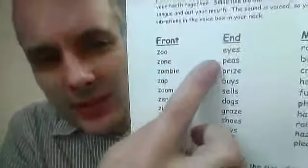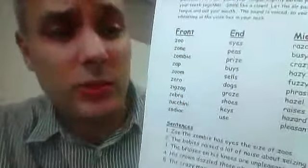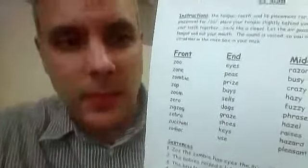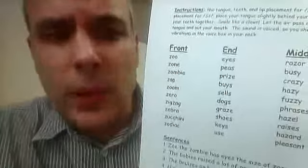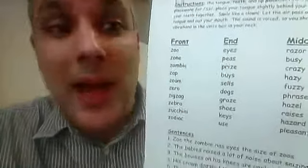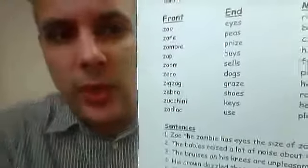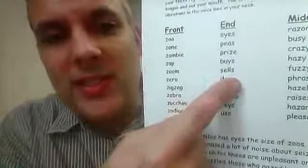Now at the end, sometimes it's an S. It will have a Z sound or Z sound. So eyes, peas, prize, buys, sells. So here you can see this one's a S and then here it's Z.